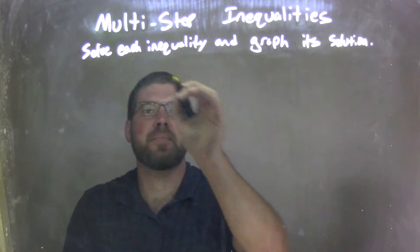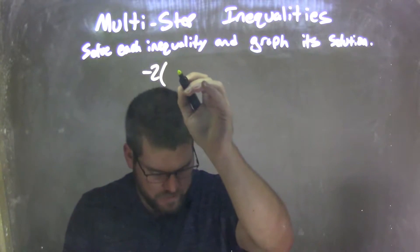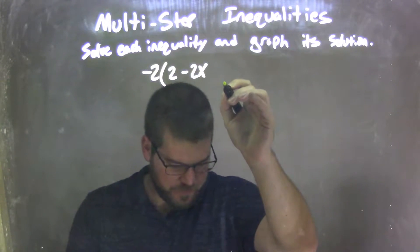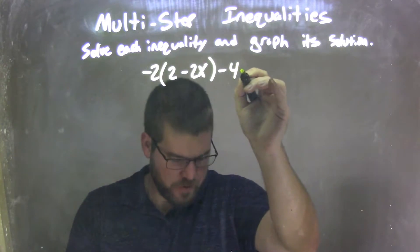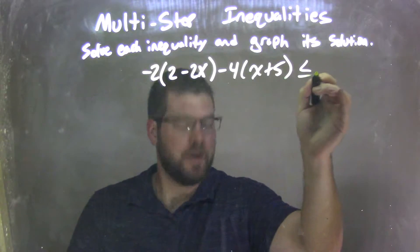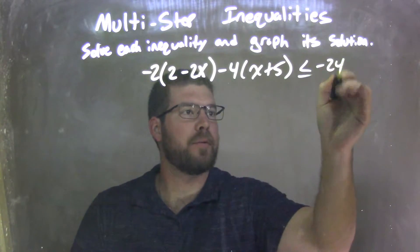So if I was given this inequality: negative 2, in parentheses, 2 minus 2x, minus 4 times, in parentheses, x plus 5, is less than or equal to negative 24.